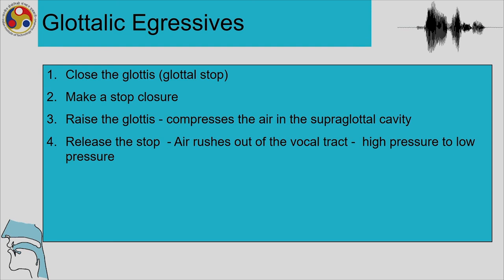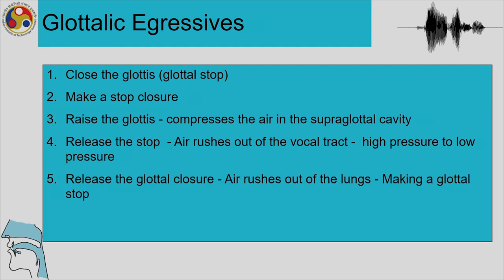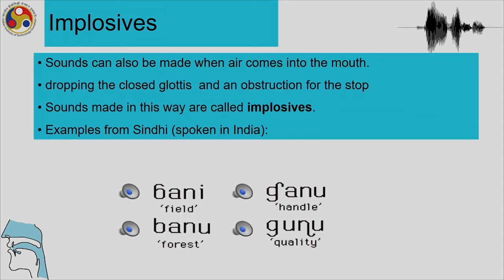To produce a glottalic egressive sound, you close the glottis — similar to gestures involved in producing a glottal stop — there has to be a closure, the glottis is raised and released, and the air rushes out from high pressure to low pressure, making a glottal stop. But the air used for producing the sound is the air trapped in the glottalic region.